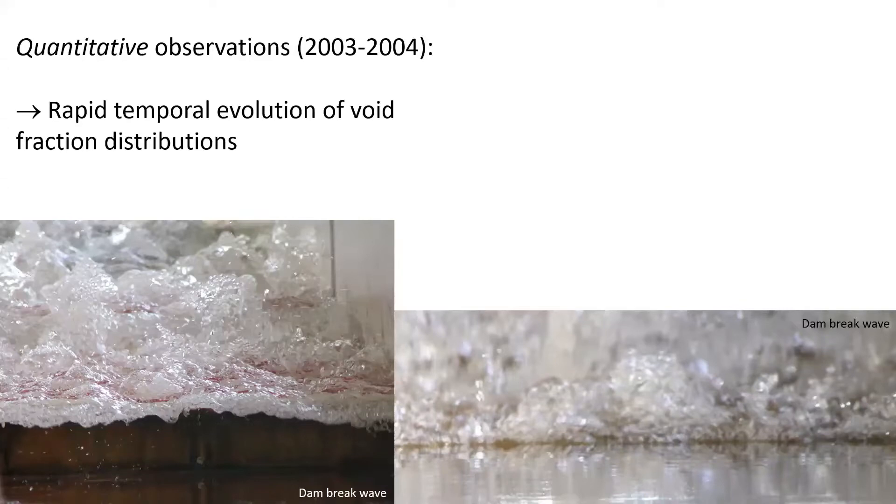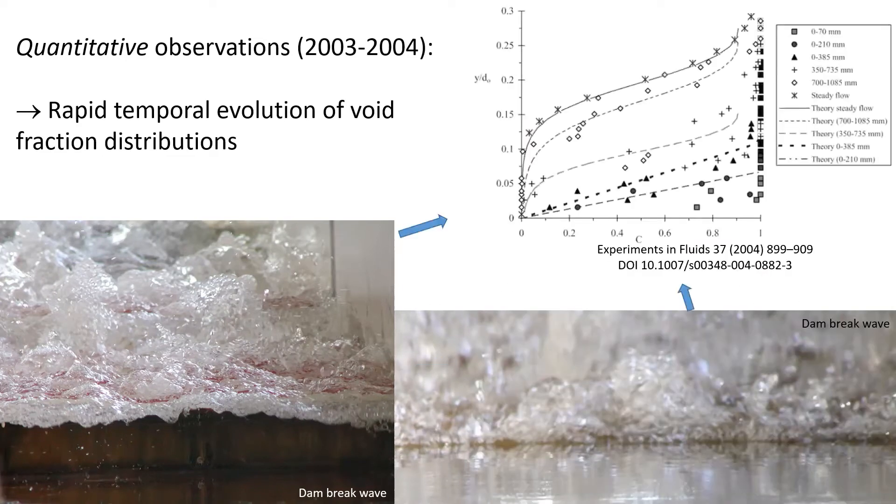Quantitative observations were conducted in laboratory during the early 2000s. Typical results shown on the top right illustrate the vertical profile of void fraction as a function of time or distance from the leading edge of the dam break wave, highlighting rapid temporal evolution in void fraction distributions, with void fraction being zero in water and one in air.